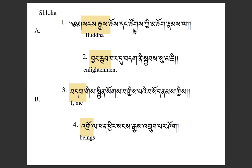The next word, soak, means collection or gathering. Then key is a particle that connects a word to the following word — so soak is being connected to choke, which means supreme or sublime. Soak-choke could be translated as 'supreme of communities.' Then nom is a particle that's often pluralizing, but here it's a list-concluding particle indicating the end of the list: Buddha, Dharma, and Sangha.